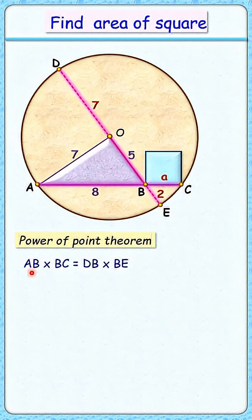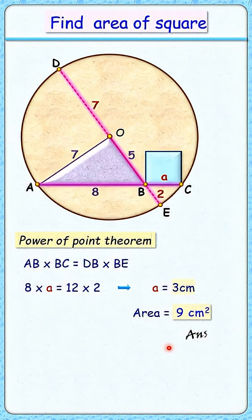we get 8 times a equals 12 times 2. Solving it, we get the value of a as 3 centimeters. The area of this square is 3 squared, or 9 square centimeters, and that's our answer.